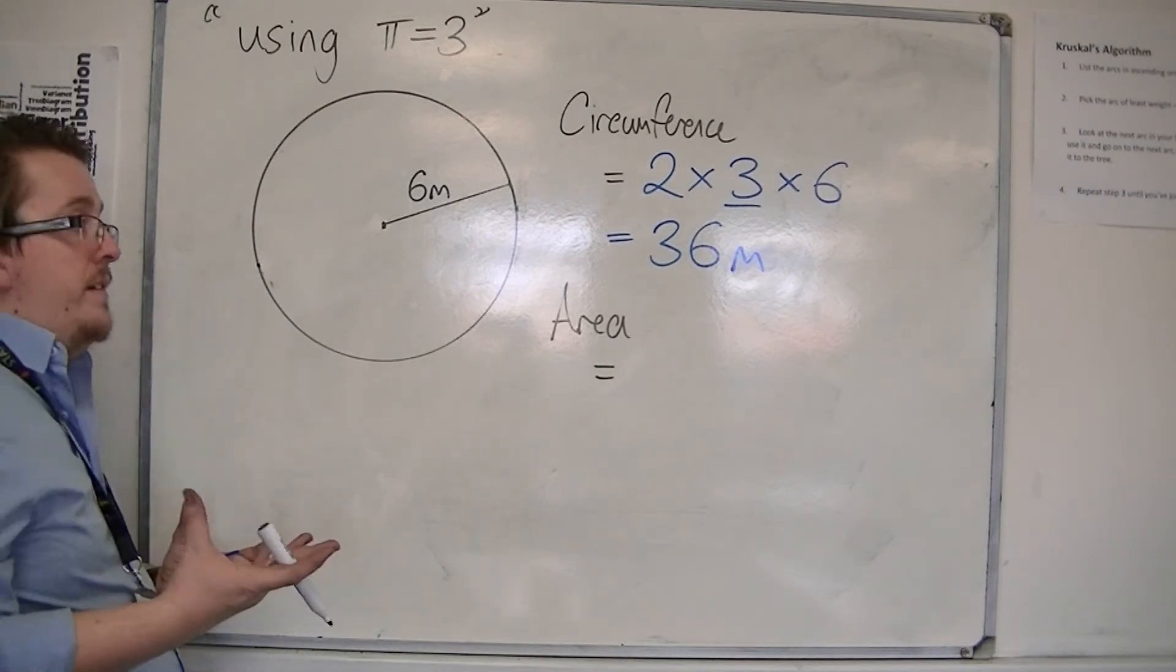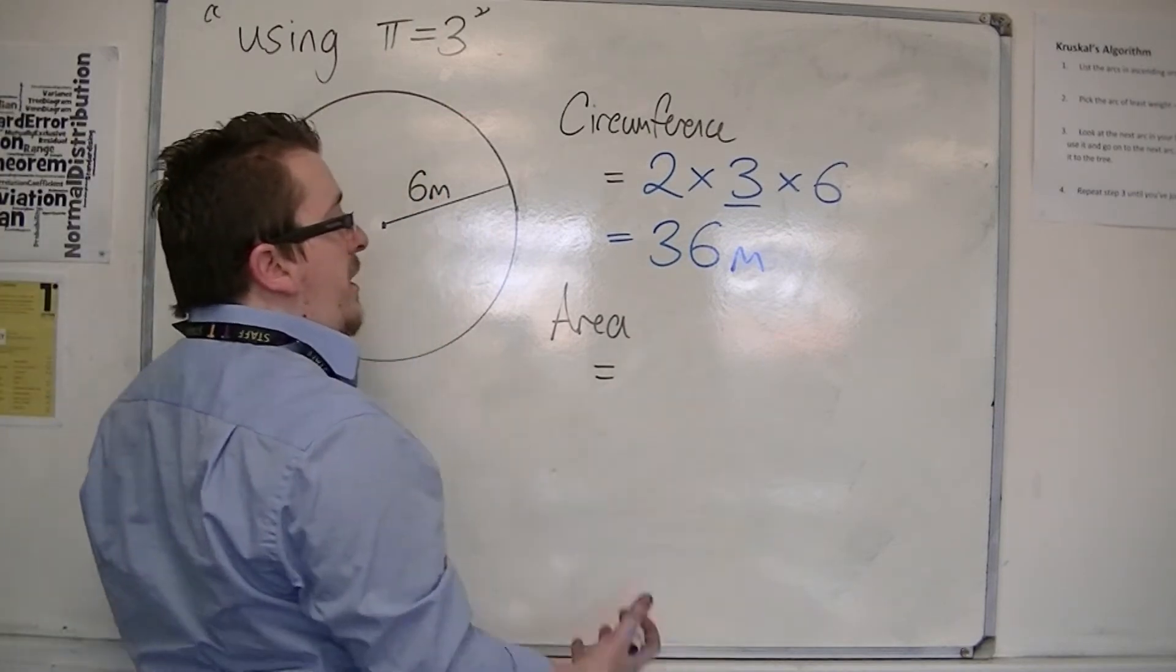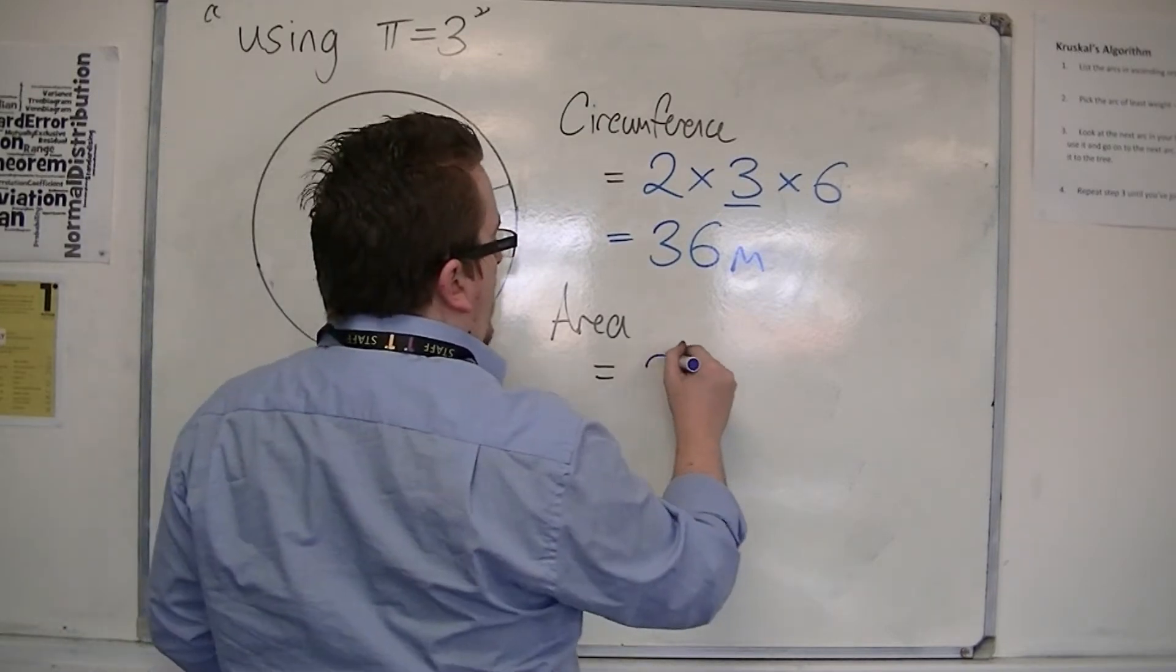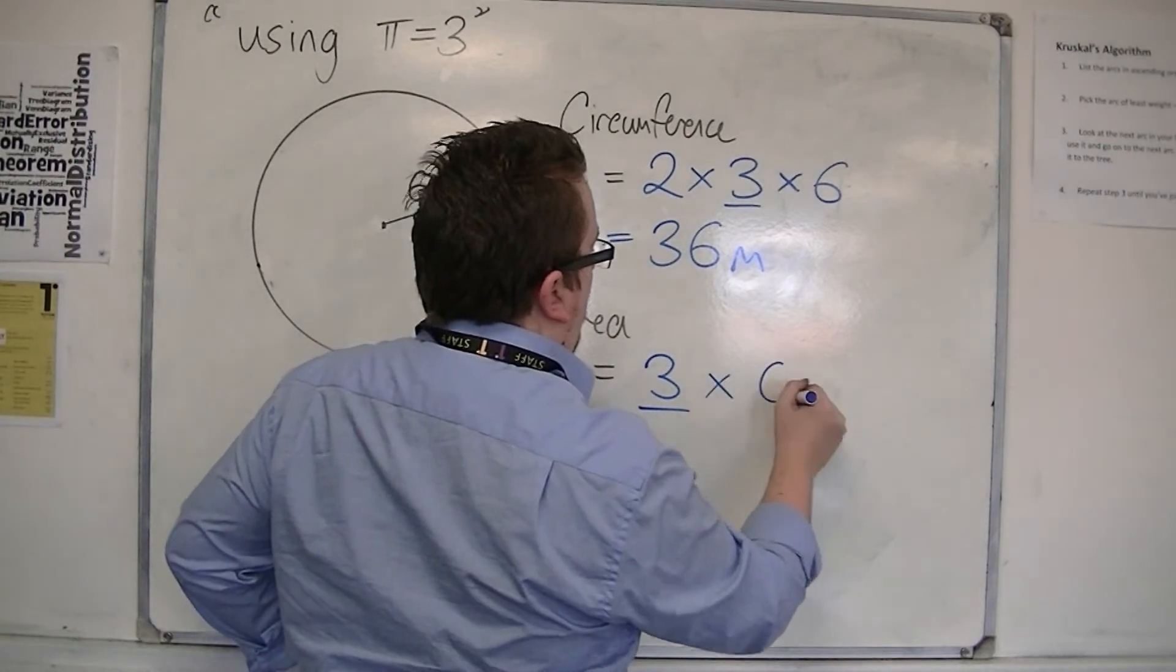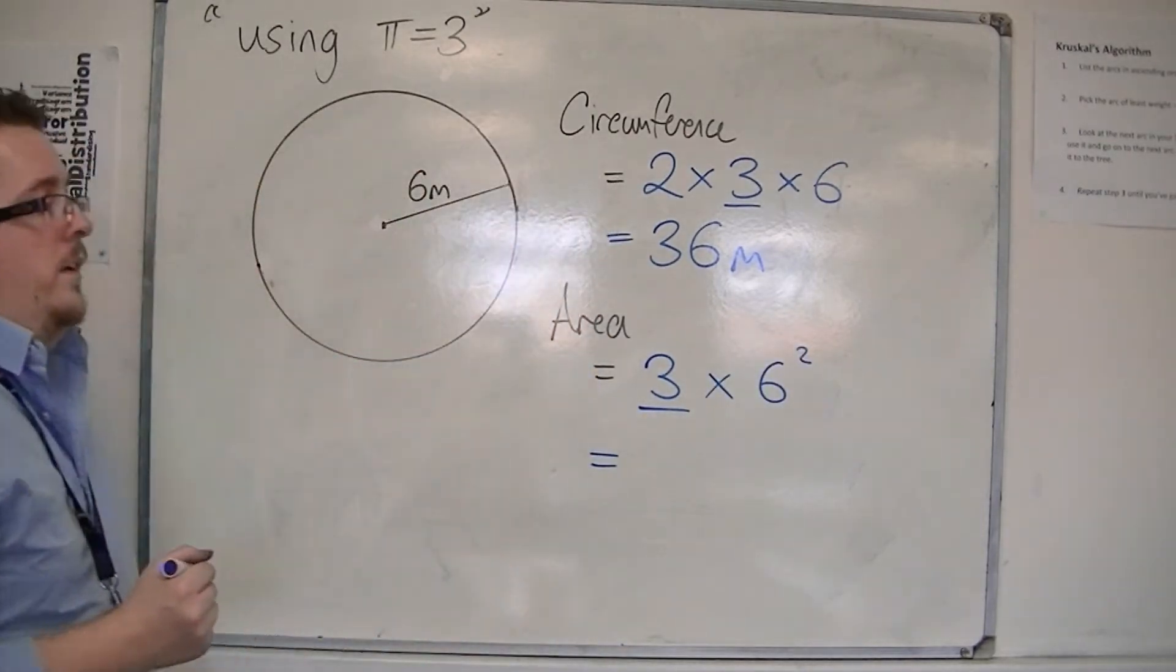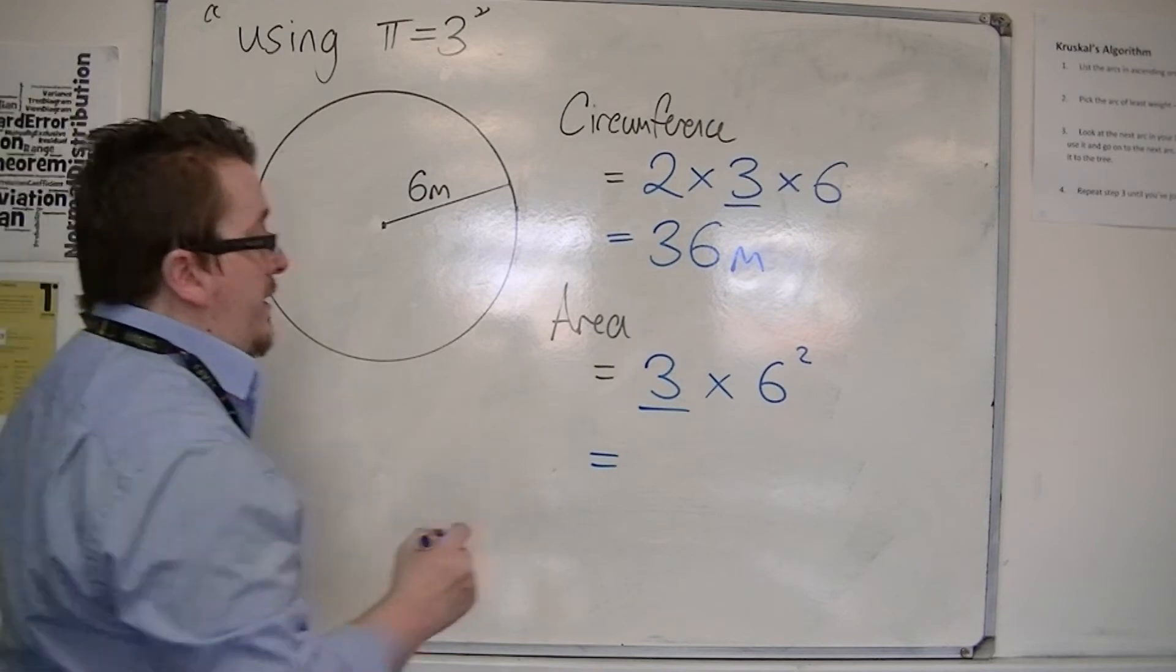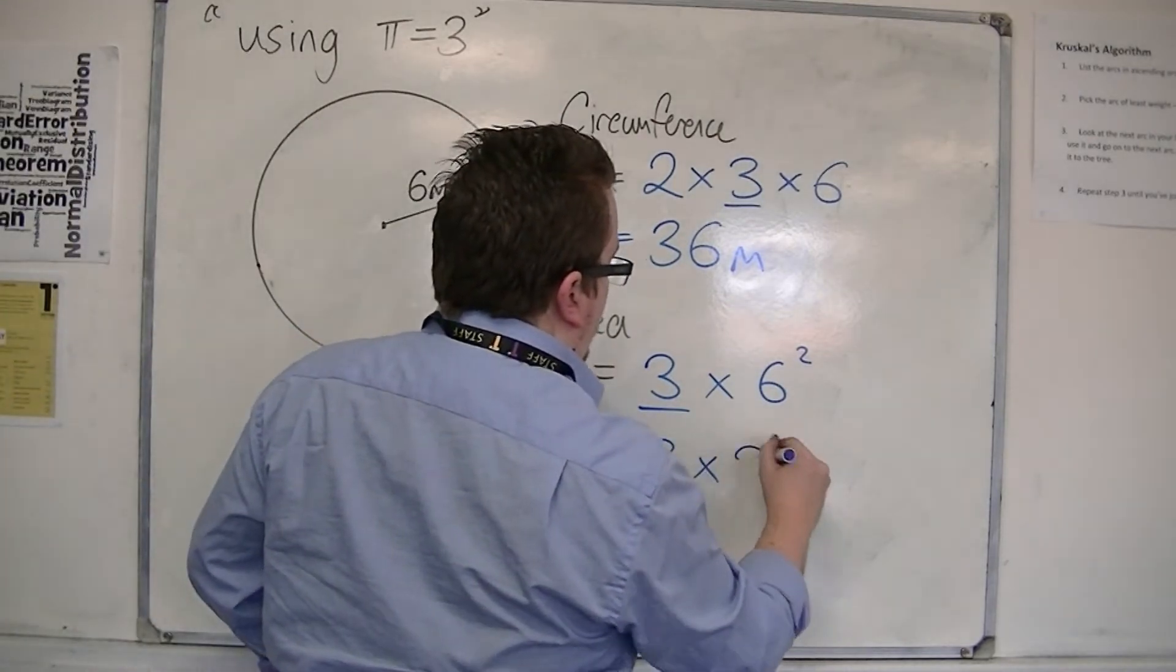For the area, I'd be using pi times r squared. So pi, and remember we're using 3, times r squared, so 6 squared. So I've first got to do the 6 squared, so that's 3 lots of 36.